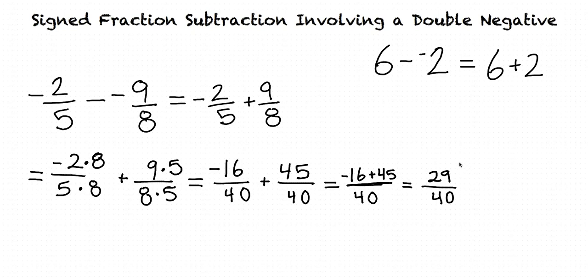Are we done? Not quite. Our last step is to check to see if this fraction can be simplified at all. To do this, we need to find if there are any numbers that multiply into both 29 and 40. One way to do this is to find the prime factorization of both of these numbers. 29 is a prime number, no numbers multiply into it, so its prime factorization is just 29.